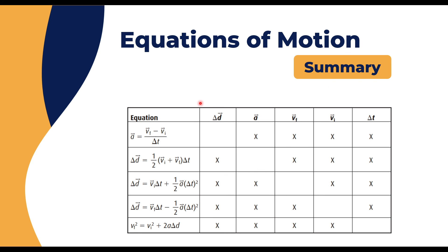Here is the summary of all equations of motion. Each equation has parameters marked with an X to show which variables it includes. If a question asks for a parameter that is missing from an equation, don't use that equation. For example, the first equation is missing Δd; the fifth equation cannot find Δt. Match your given values to the right equation and solve efficiently.